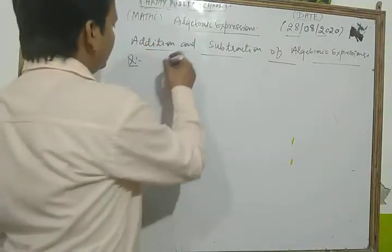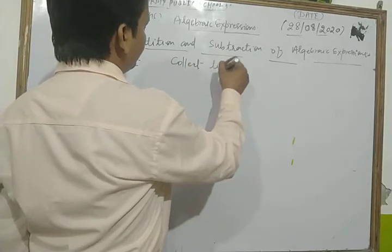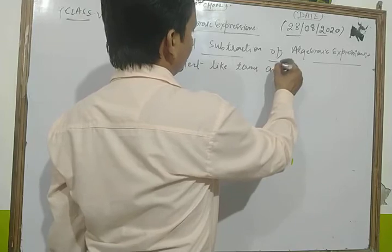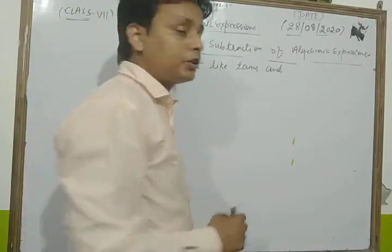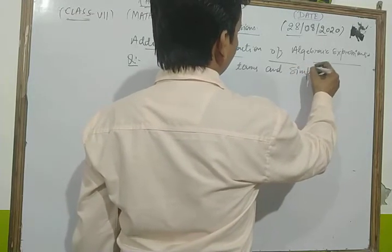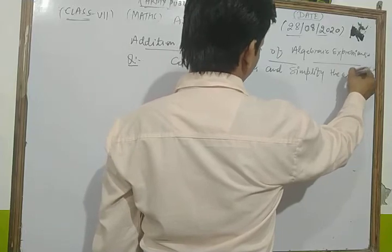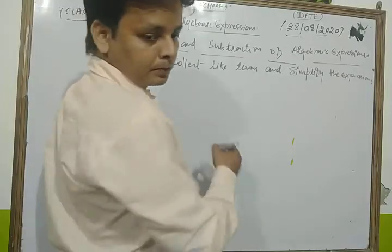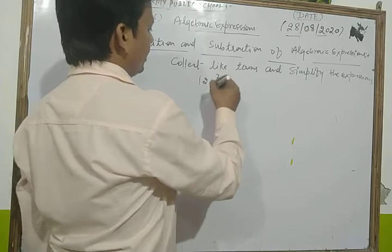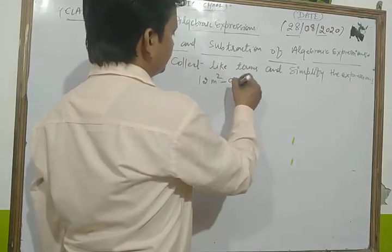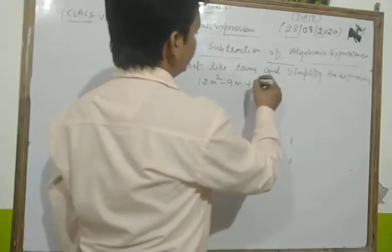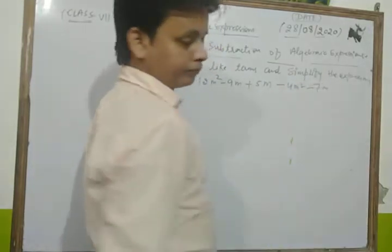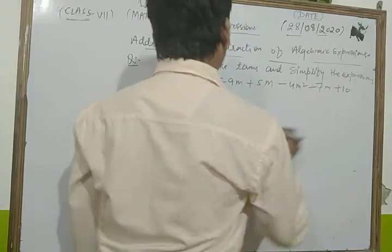Let's take the first question based on this topic. Your question is: collect like terms and simplify the expression. The expression is 12m² minus 9m plus 5m minus 4m² minus 7m plus 10.